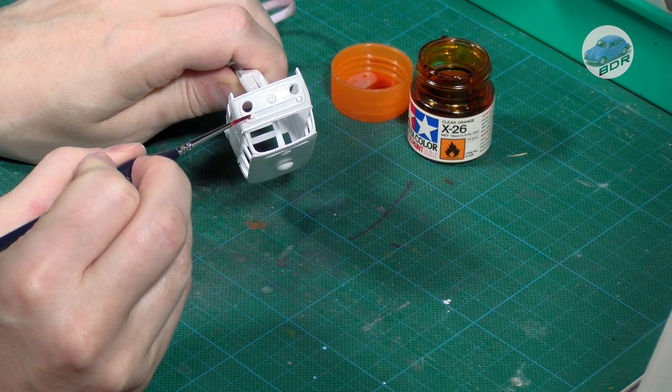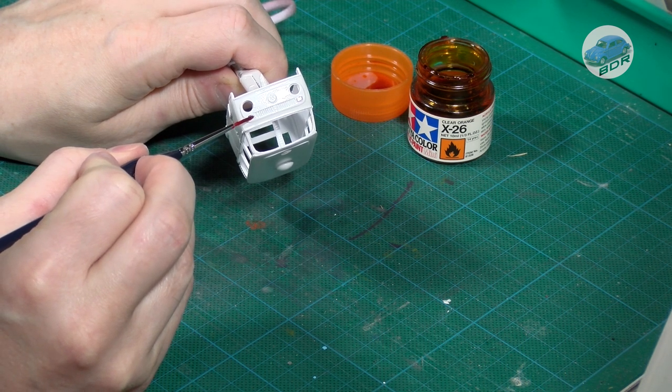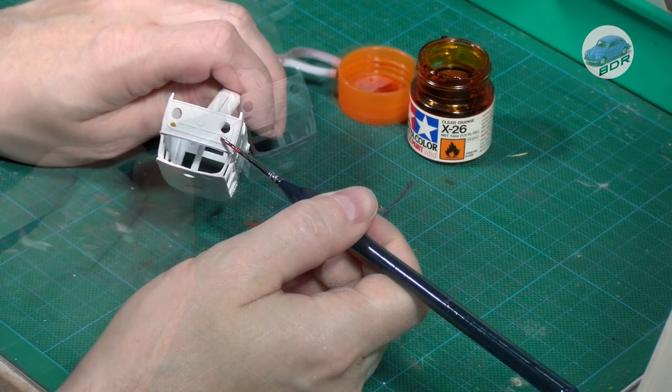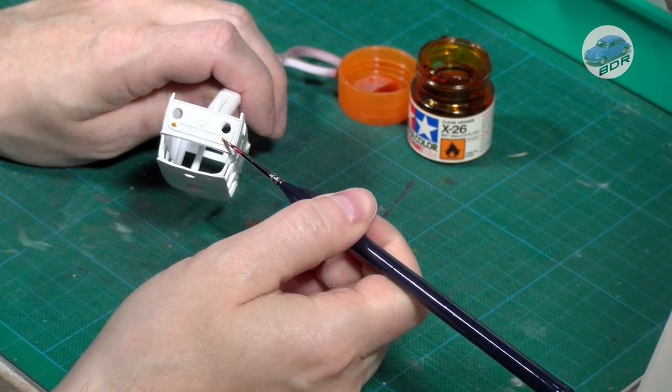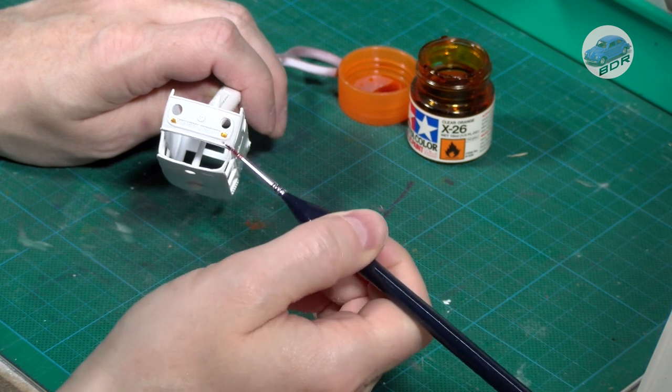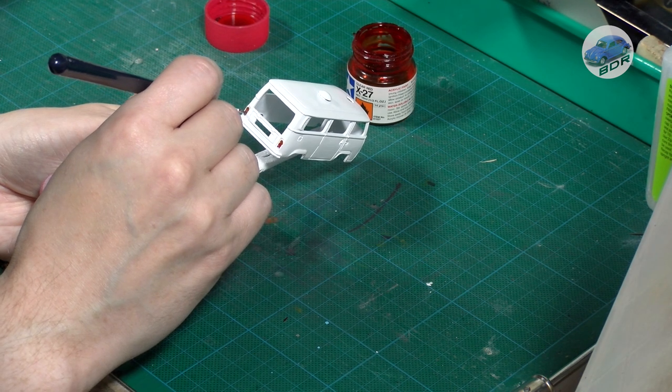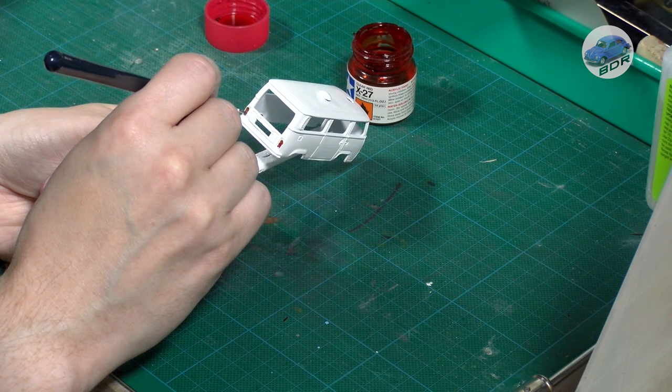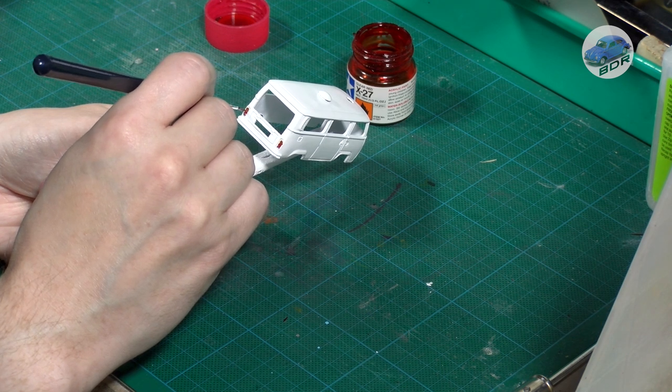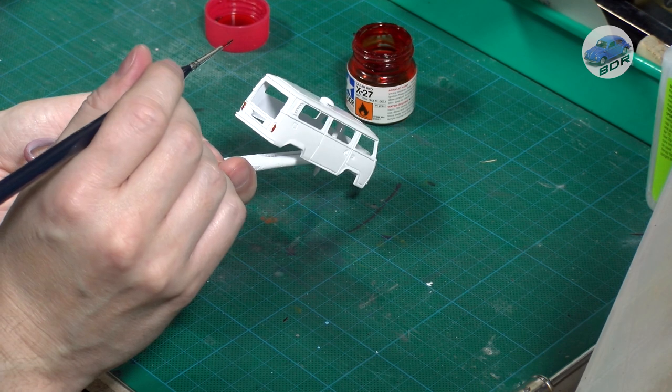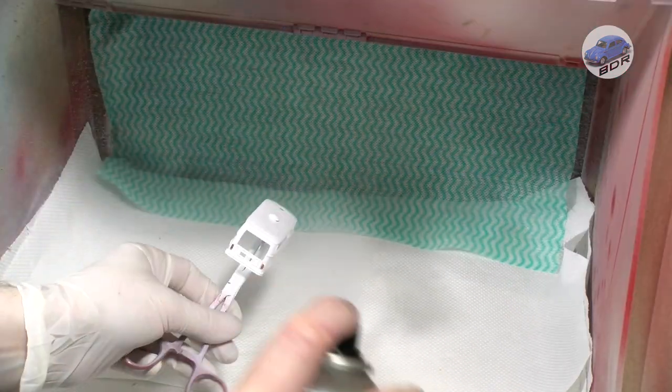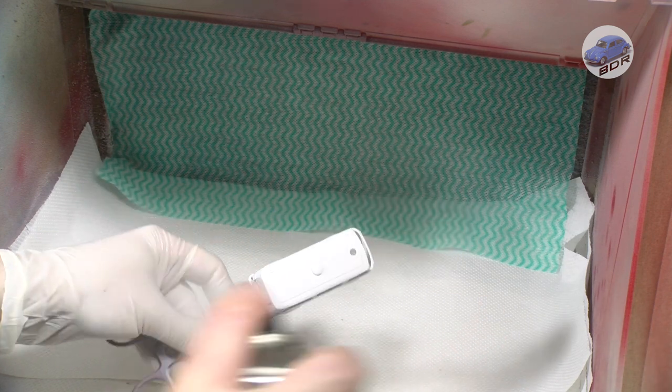The indicators then get a coat of Tamiya clear orange and the taillights are painted in the right configuration of orange, red and white. Finally everything gets a couple of coats of AK Interactive Gloss Varnish to give the model that final gloss shine.